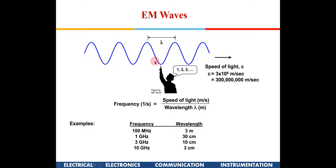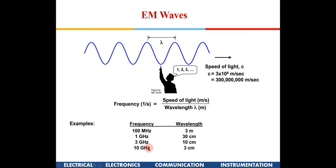Let us recall how an EM wave looks. This RF signal is sinusoidal and periodic, repeating at time period T. The total distance between two points equal in phase and magnitude is known as lambda — the wavelength. Frequency and wavelength are related by the equation: frequency equals the speed of light divided by wavelength. As frequency increases, wavelength decreases.